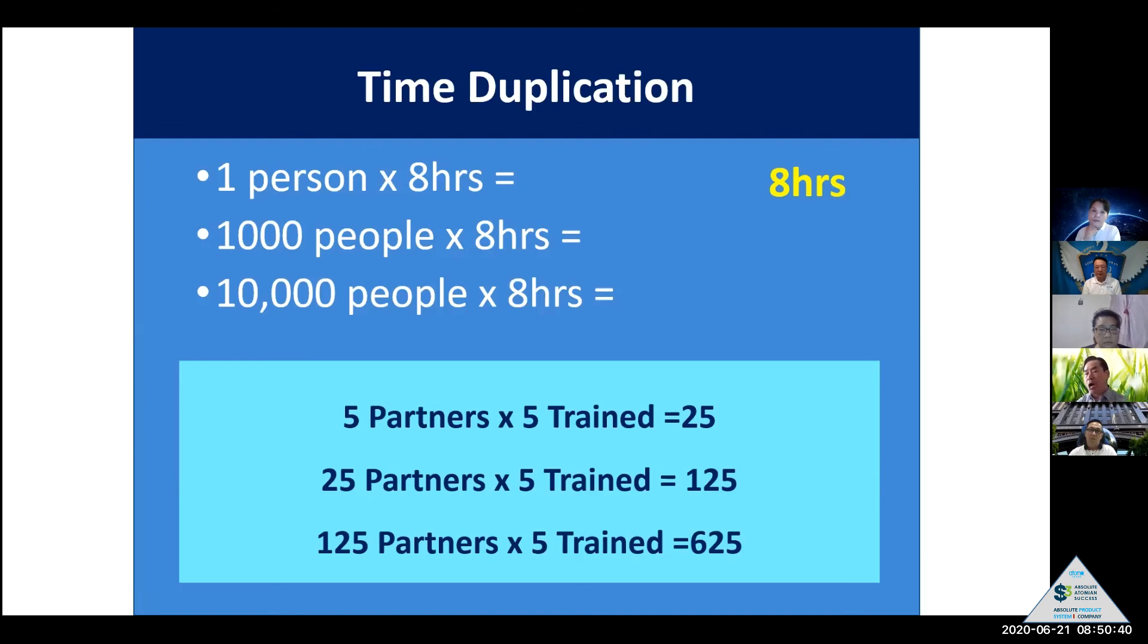But Atomy education business, more and more people, 1,000 people educated that they multiply eight hours per day. Then what's going to happen? Individual eight hour productivity, but 1,000 people is eight hours - 8,000 hour productivity.